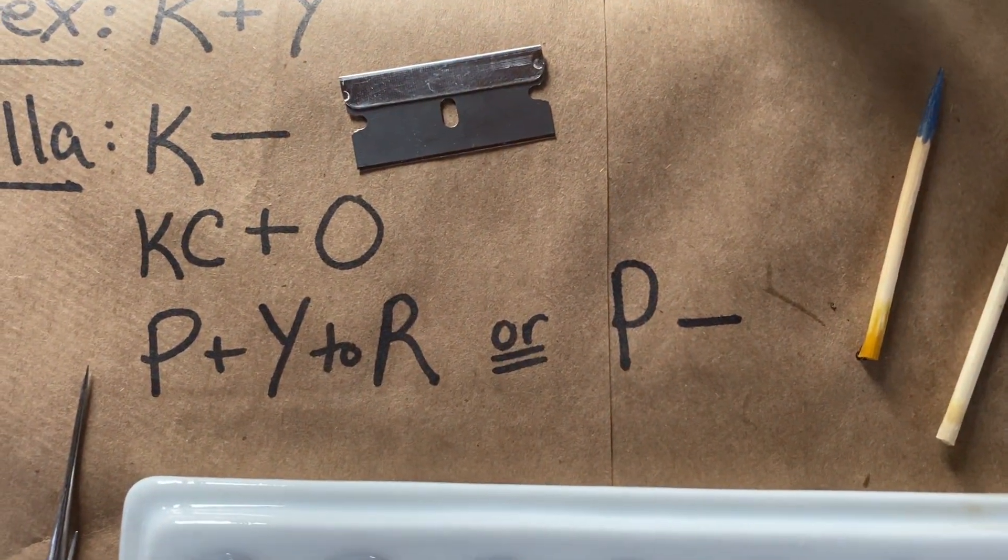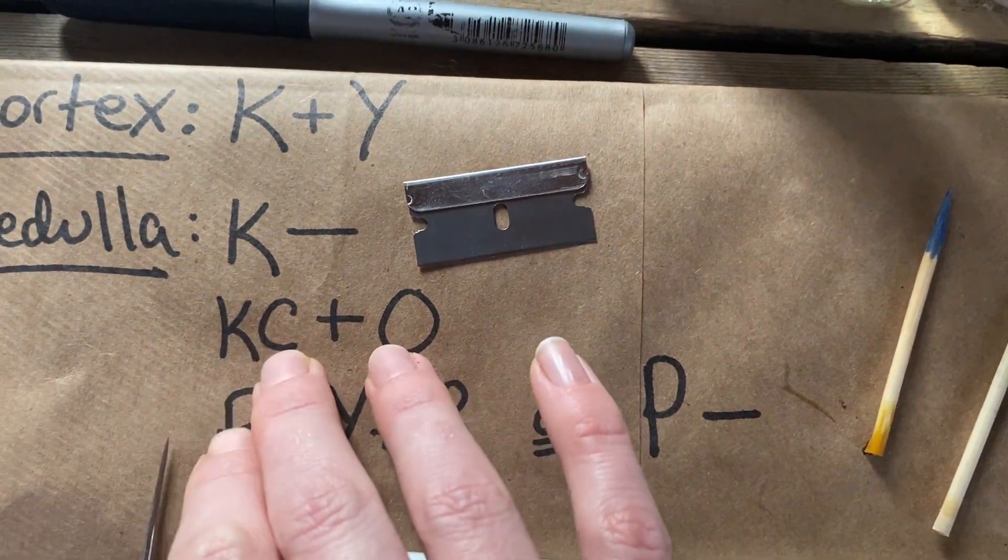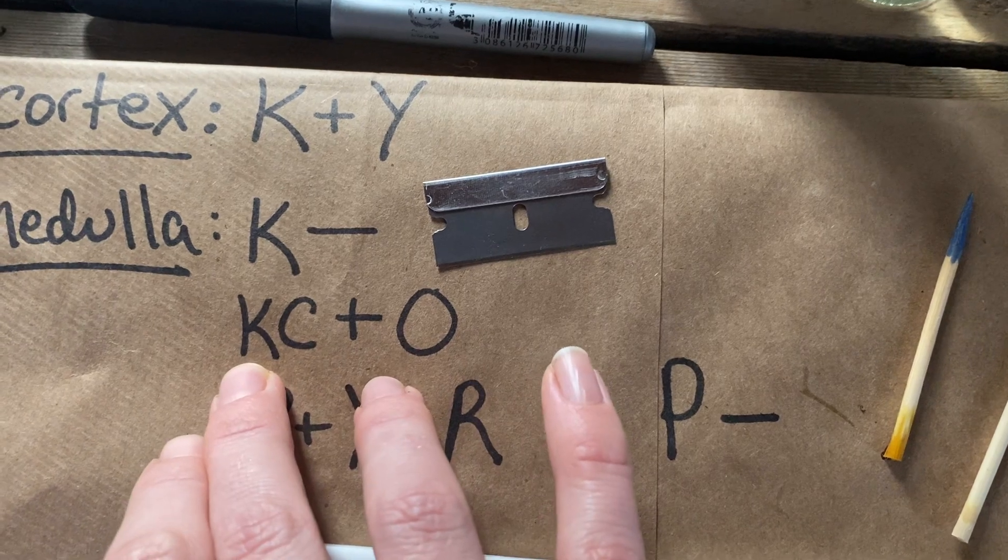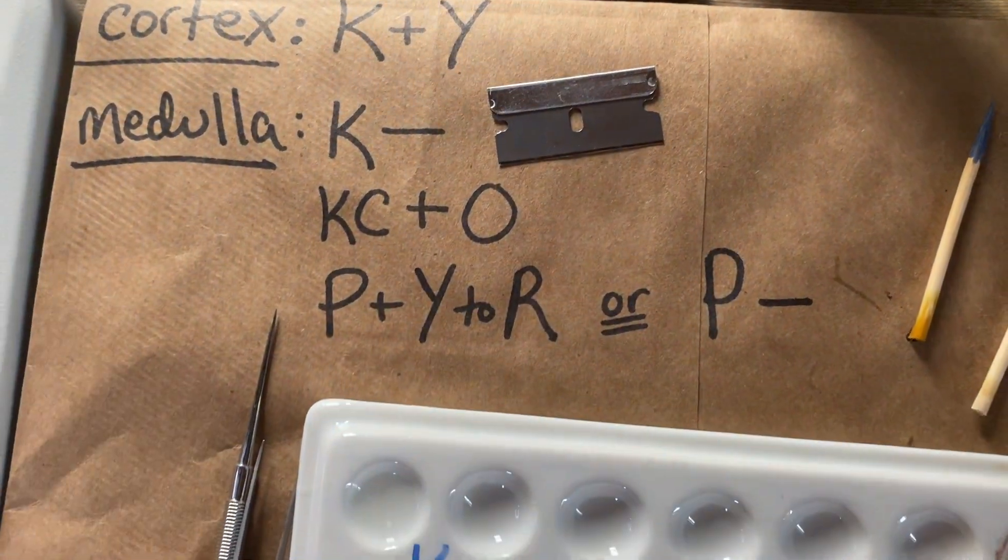So now we are going to do the next test, which is actually a combination of tests, KC. So first we're going to do a little drop of K and then a little drop of C, and we will hopefully see orange.